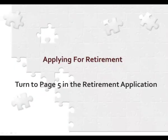To begin completing your application, please turn to Page 5. Page 5 is where you will provide your basic personal information and retirement date. Halfway down the page, you will be asked for your email address — please provide your personal email address. Also provide a work phone number, or a cell phone number if that is the best way to reach you during the business day. Please complete Page 5 through your current employer.